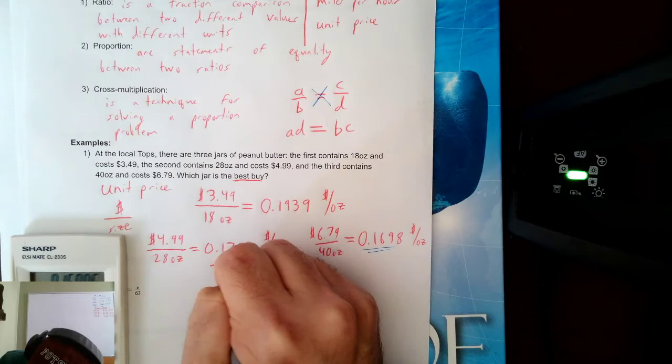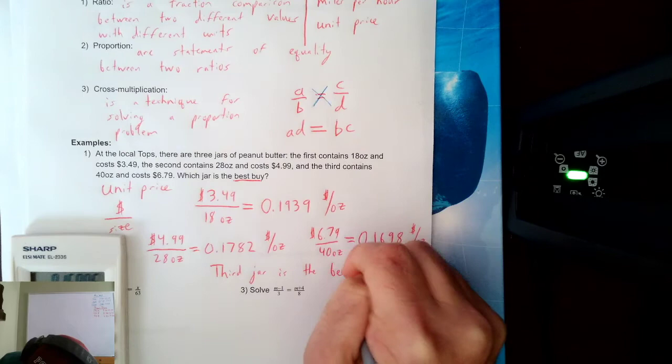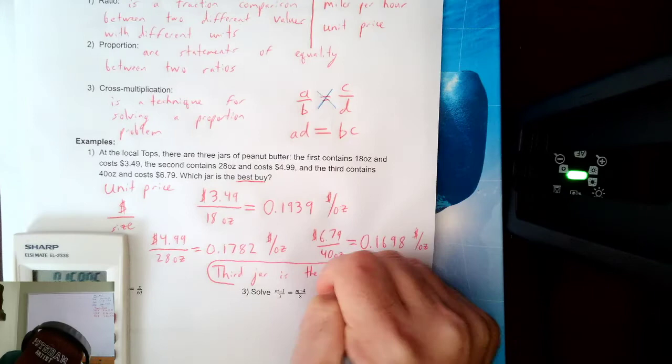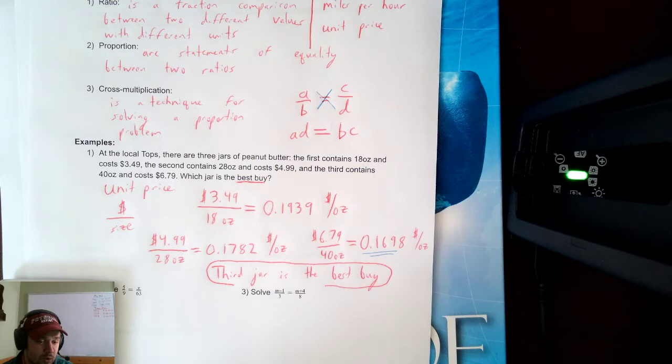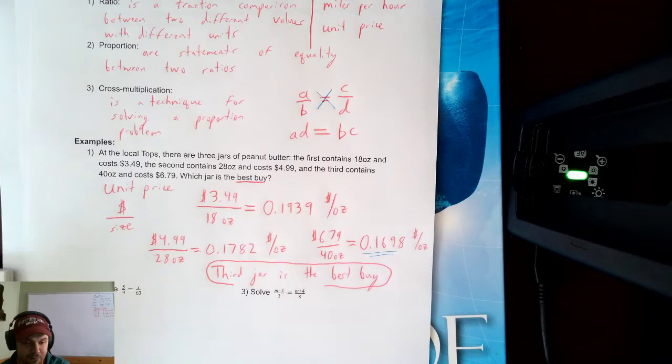The third jar is the best buy. I get the most peanut butter for the price I am paying with the third jar. I compare unit prices by always doing dollars over size. So if I'm trying to be frugal, I should buy the largest jar because it has the best unit price. Largest isn't always the best unit price though, so always divide them out to double check.